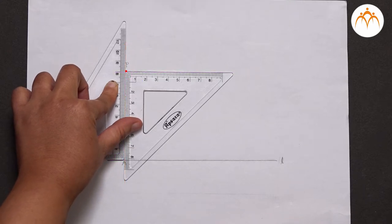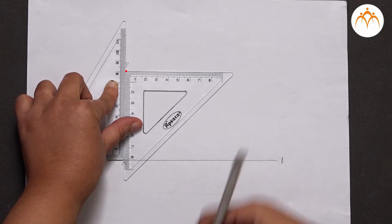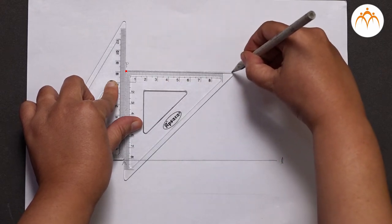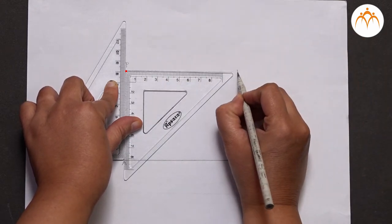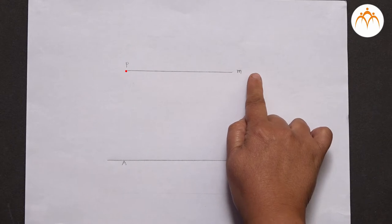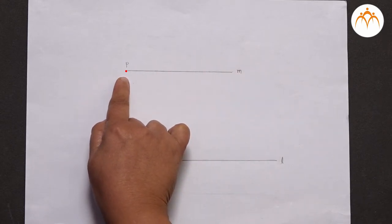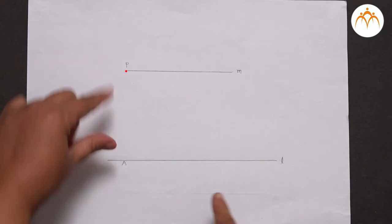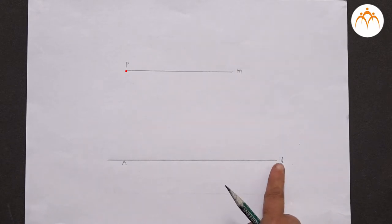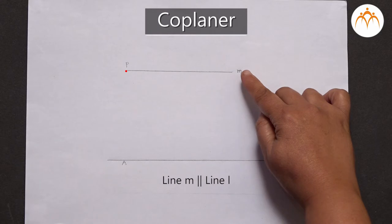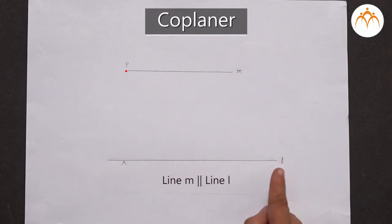Now, we hold these two set squares tight in the position and then we draw a line along this edge of the set square through point P. Let us name this line as line M. So, we have constructed a line M through an outside point P such that this line M is at a perpendicular distance PA from the given line L, and both lines M and L are lying in the same plane. Hence, the line M which we have constructed is parallel to the given line L.